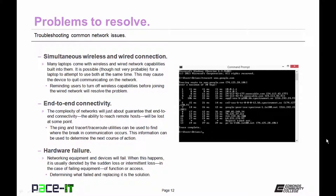Simultaneous wireless and wired connections will also create some networking issues. Many laptops come with wireless and wired network capabilities built into them. It is possible for a laptop to attempt to use both at the same time. This may cause the device to quit communicating on the network as a whole. Reminding users to turn off wireless capabilities before joining the wired network will resolve this problem.